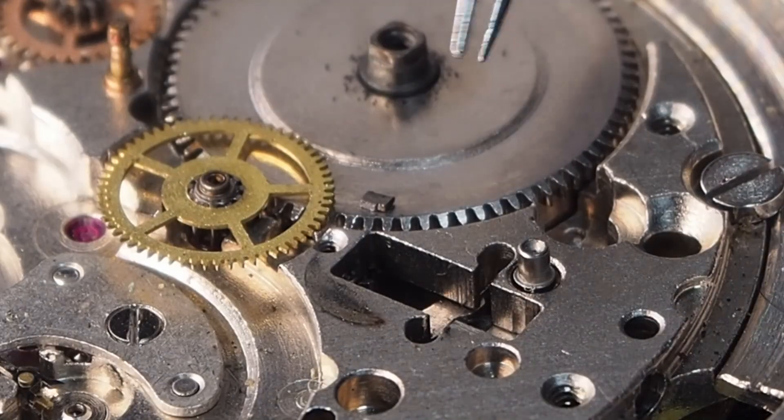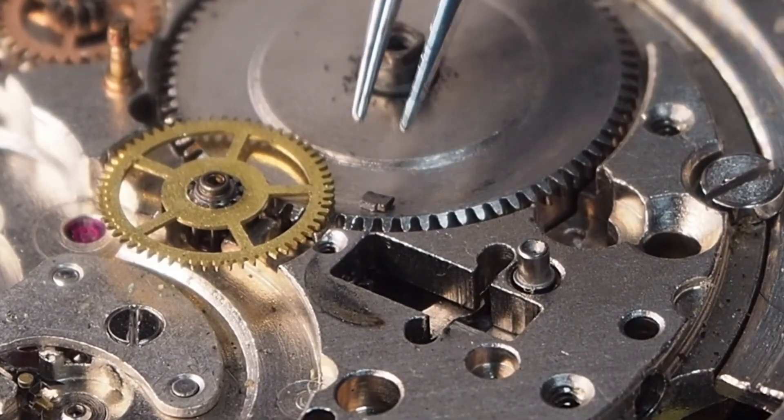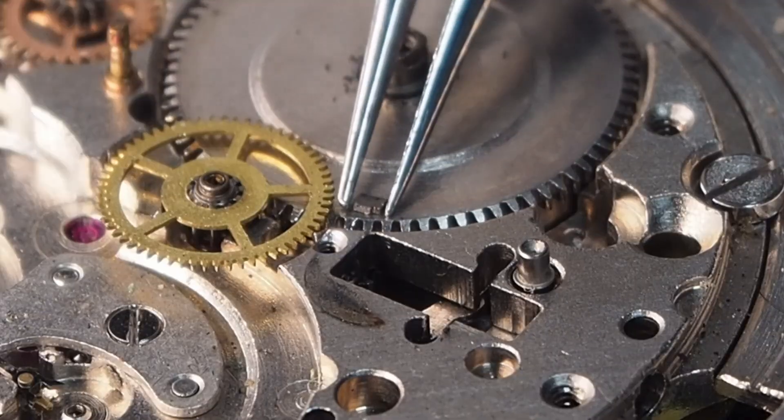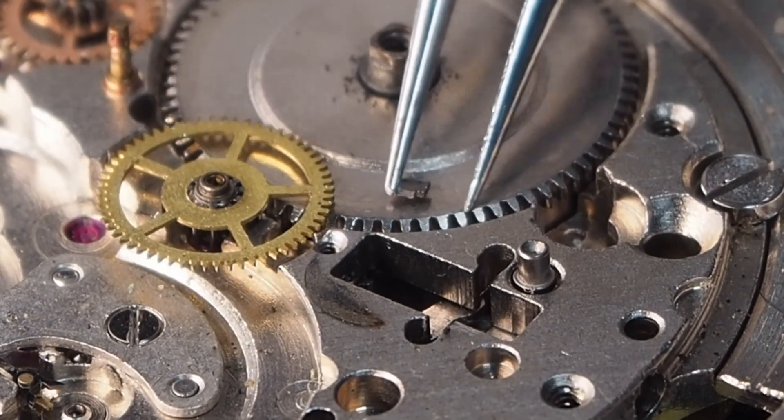Here, on the main spring barrel, you can see the broken tooth. This would cause the gear train to slip or jam, stopping the watch.